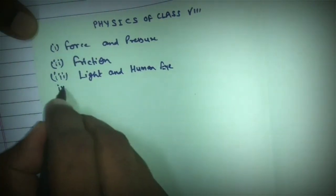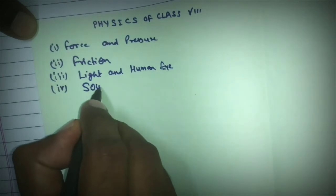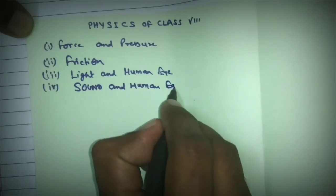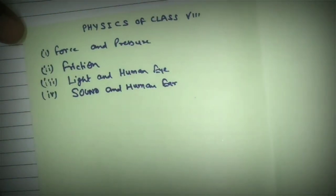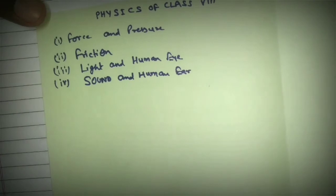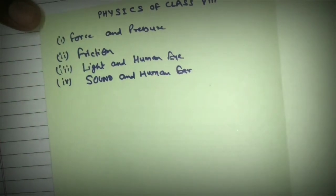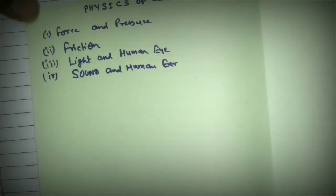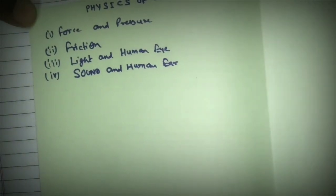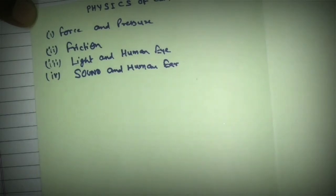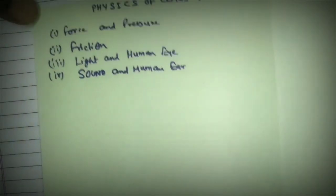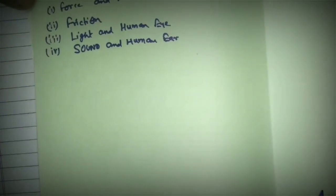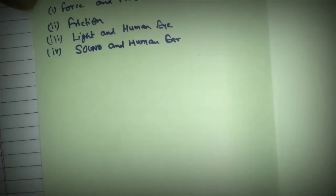Next chapter in physics is sound and human ear. In this chapter we discuss the basic properties of sound and waves, the characteristics of sound waves, and the speed of sound waves. We also discuss that sound needs a medium and without any medium sound cannot propagate.